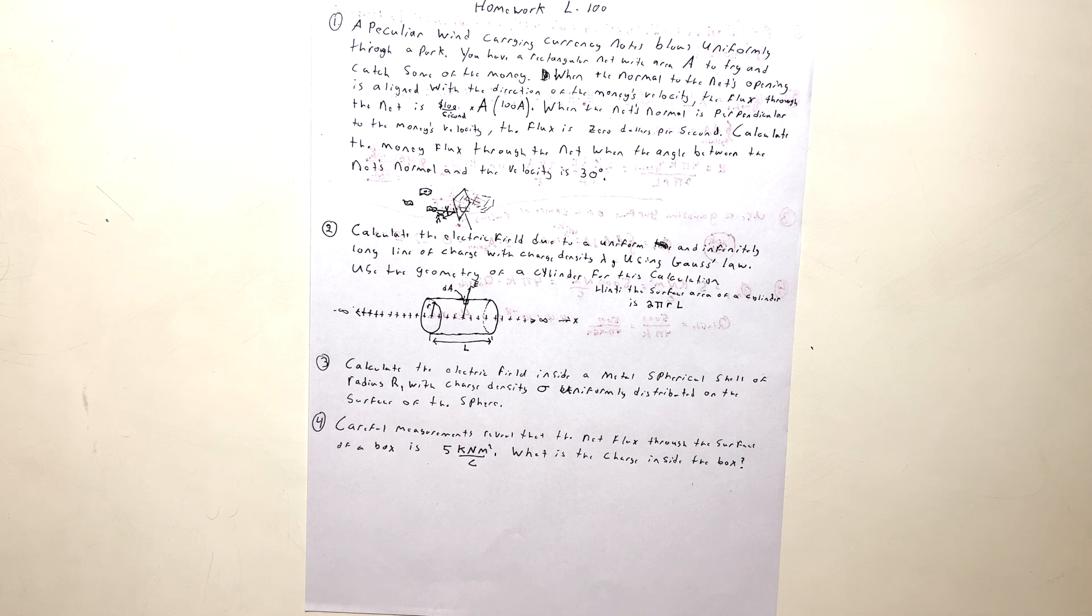All right, number two. Calculate the electric field due to a uniform and infinitely long line of charge with charge density lambda, using Gauss's law. Use the geometry of a cylinder for this calculation. Hint, the surface area of a cylinder is 2 pi r L. Okay, now we have an illustration. Let me see if I can reproduce that illustration here.